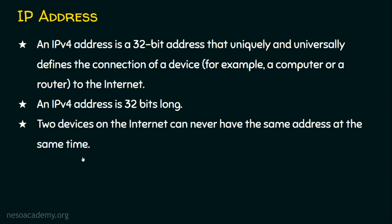This is a very important point — two devices cannot have the same address at the same time. If it is a local area network, we will never assign the same IP address to two different devices. We know IP conflict will happen and communication will not happen. But we can't expect that in the internet. Everyone has their privilege to use their own private IP addresses. In the upcoming lectures, I will explain what are private IP addresses and what are public IP addresses. In the internet, we need uniqueness in terms of IP addresses.